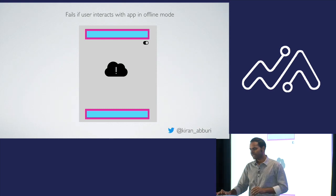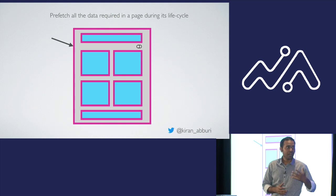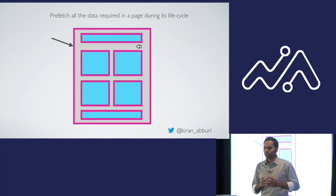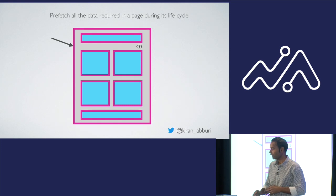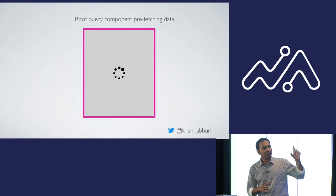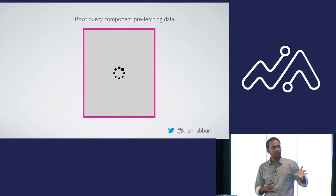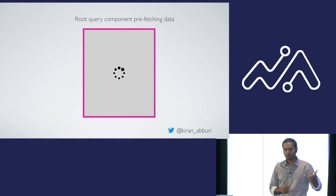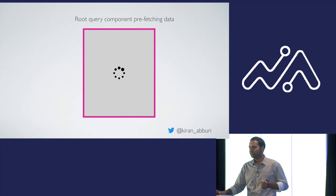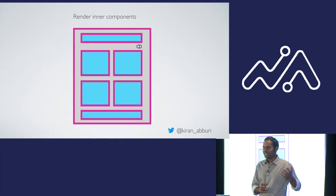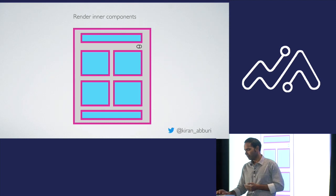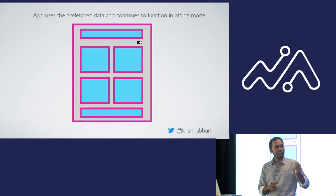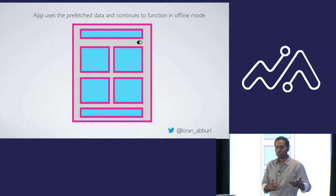To solve this, we wrapped our entire app with a big GraphQL query that prefetches all the data required for the app — not just what's currently needed, but also data that might be required in the future as the user interacts. The flow looks like this: a BigQuery component at the top prefetches all data; while fetching there's a spinner; once data is prefetched, inner components render; and all inner GraphQL queries resolve directly from the cache because we already prefetched the data.